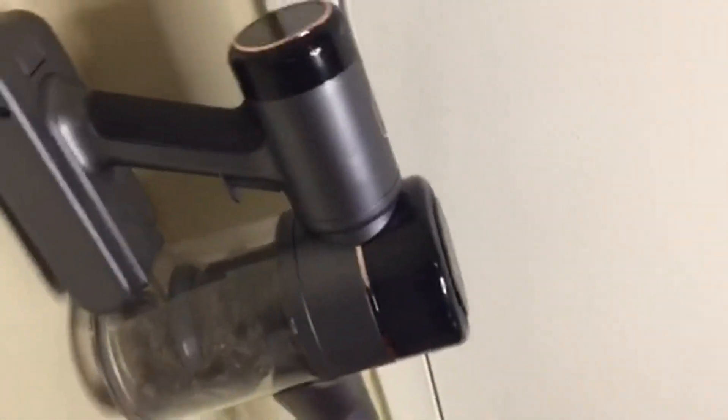Here's what the rest of the vacuum looks like. This can be adjusted up and down to make it smaller or larger. This can be pulled off, so this whole part can come off, and then there are different smaller attachments that can be added.